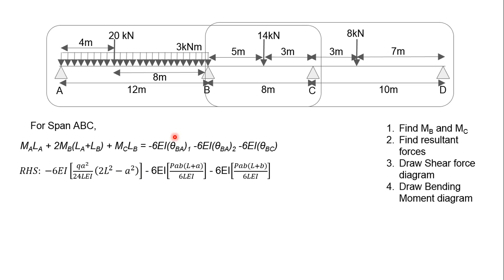For the right-hand side, do take note there's BA1 and BA2 because there are two forces acting on the span AB, which is the 20kN concentrated force here and 3kNm uniform load. And do take note that BA is the force on the left-hand side and BC is the force on the right-hand side. So when you are using the formula, do use the formula for the left-hand side for BA and the right-hand side for BC.